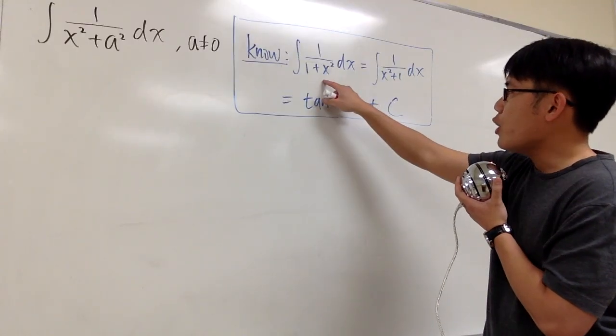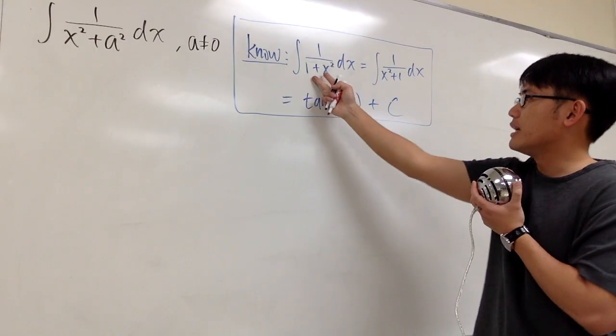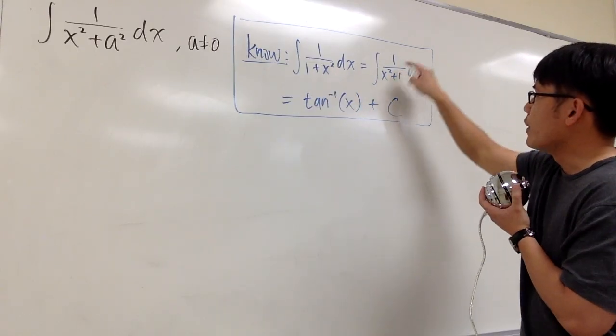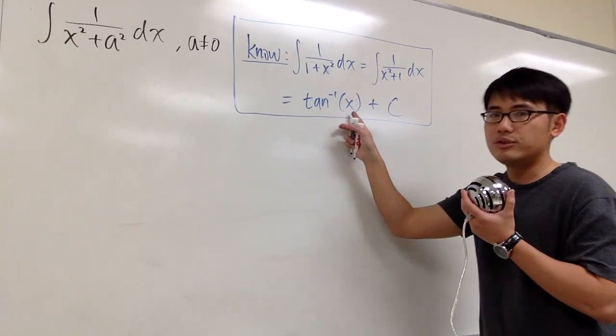Anyways, we know we have the integral of 1 over 1 plus x squared dx, which is the same as, I can flip this, integral of 1 over x squared plus 1 dx, all this will give you the inverse tangent x plus c.